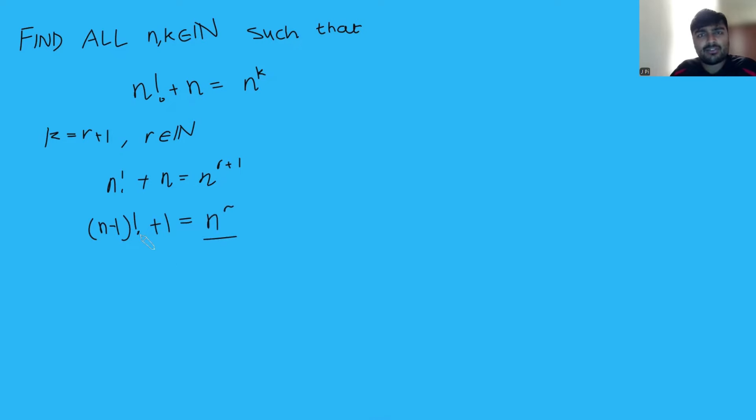Now, n to the r is very clearly a multiple of n, and therefore the left-hand side must be a multiple of n. Now, I claim that this can only occur if n is prime. Why is that? Well, if n wasn't prime, let's just use an example. If n was, let's say, 24, what I could do is take a small prime factor of it. It really doesn't matter which one. I'm going to choose 2 here.